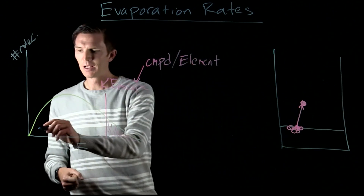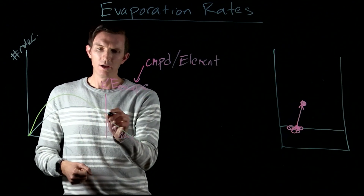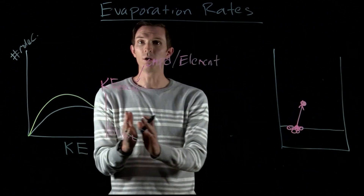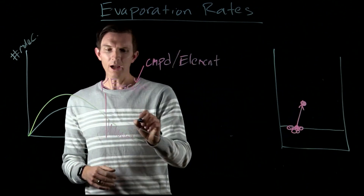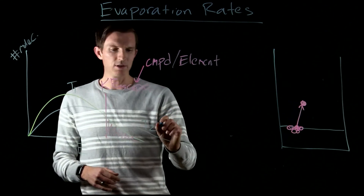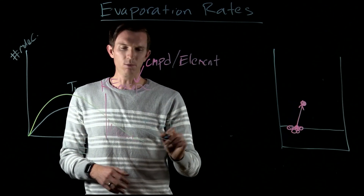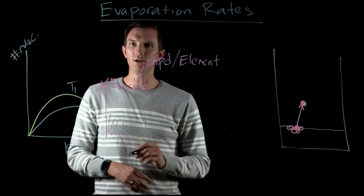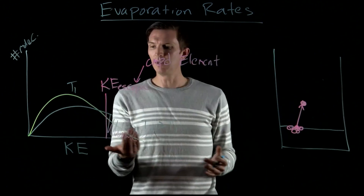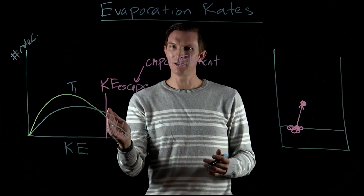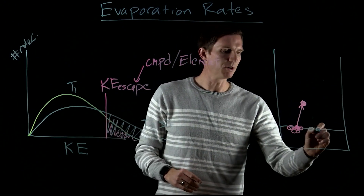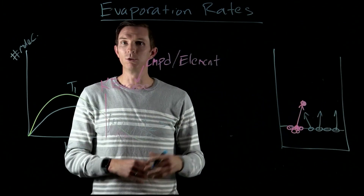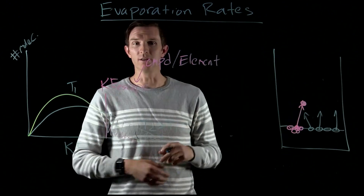At a higher temperature, the average kinetic energy is higher, meaning we have more molecules with higher kinetic energy. At this second temperature T2, which is greater than the initial temperature, a higher percentage of molecules have the ability to leave because more molecules have a kinetic energy greater than the escape kinetic energy. We'd have a greater fraction of molecules on the surface that can leave, causing the liquid to evaporate much faster.